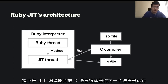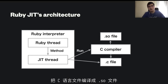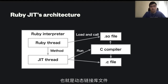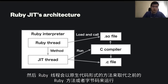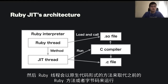The JIT thread runs a C compiler as a process, and it compiles the C file to a .so file, which is a shared object file. Because it's a shared object file, Ruby can dynamically load the native code from the .so file to the Ruby thread, and Ruby thread can call the native code as a method instead of running or interpreting the bytecode.